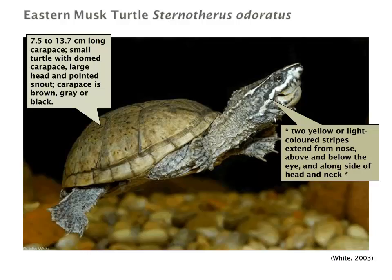The eastern musk turtle is a very small turtle, only 7.5 to 13 cm long — very easy to miss. They have a domed carapace with a very pointed snout. The carapace is brown, grey, or black. One of the unique identifying features for this turtle is the two yellow or very light-coloured stripes that extend from the nose, above and below the eye, along the side of the head and neck.